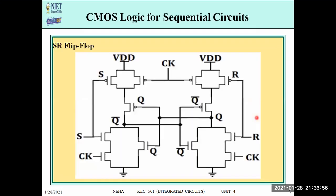This is the circuit — the CMOS logic design using NOR latch. If we count the total CMOS transistors used: in Y1 we used 6, and in Y2 we used 6. So the total CMOS design for the SR flip-flop uses 12 transistors.